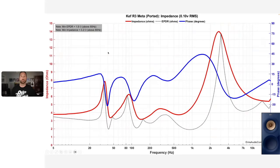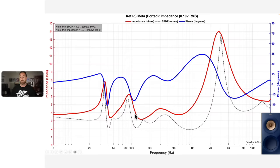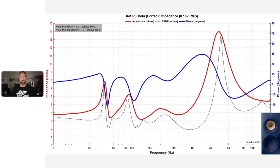This is the KEF R3 Meta impedance. It has a minimum impedance of about 3.2 ohms above 80 Hz. The reason I note above 80 Hz is that most people using bookshelves will cross them to a subwoofer. The minimum EPDR — the effective resistance accounting for phase — is going to be about 1.9 ohms above 80 Hz. This tells me you're going to want a dedicated amplifier to drive this speaker and not use it with an AVR. A 4-ohm amplifier is my suggestion.